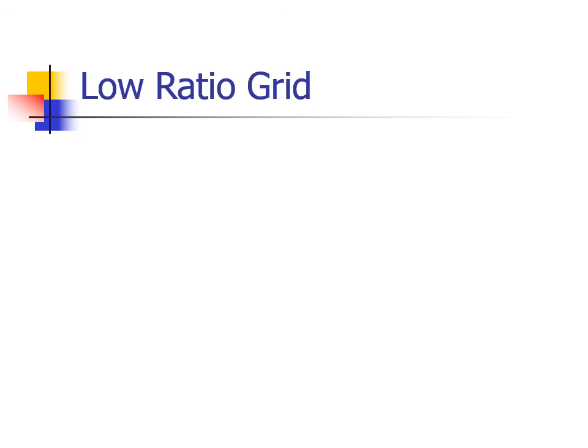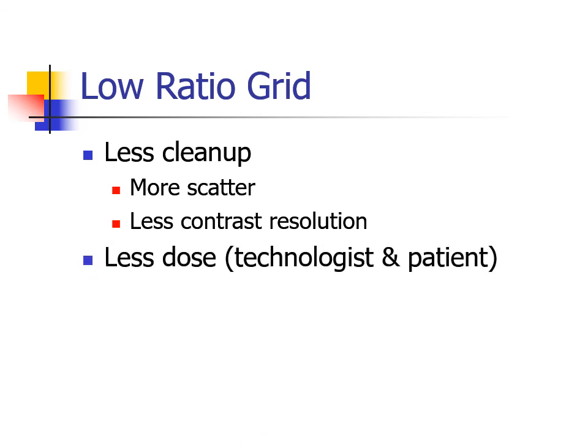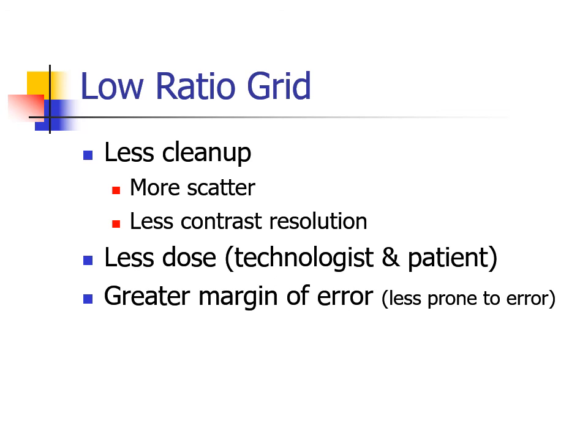As one might expect, the low-ratio grid has the opposite characteristics of the high-ratio grid. More scatter will make it through a low-ratio grid, so the ability of the grid to produce images with high-contrast resolution will be reduced. The compensation factors for low-ratio grids are less, so patient dose will be reduced compared to high-ratio grids. Low-ratio grids can better tolerate misalignment of the central ray, so are well-suited for portable and non-bucky imaging. I'd recommend these grids not exceed an 8-to-1 ratio.